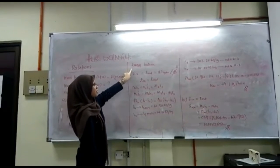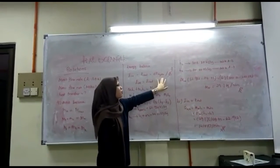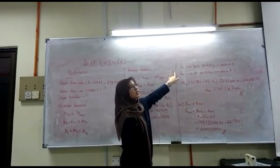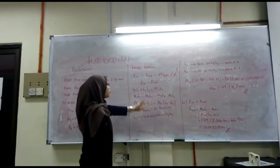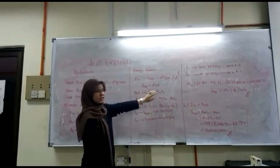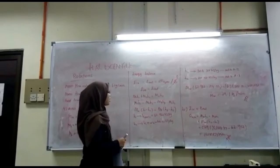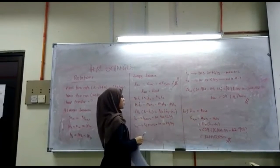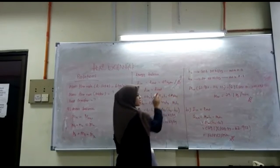Next, the energy balance equation: E_in minus E_out equals the change in E_system over delta time. Delta E_system over delta time equals zero because this is a steady flow process — no transient effects apply. From the derivation, we get E_in equals E_out, which gives: M1·H1 + M3·H3 = M2·H2 + M4·H4, where the left side is energy in and the right side is energy out.